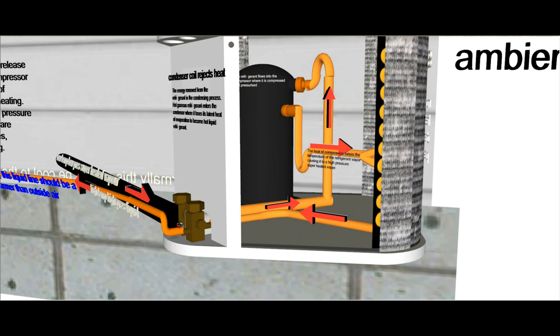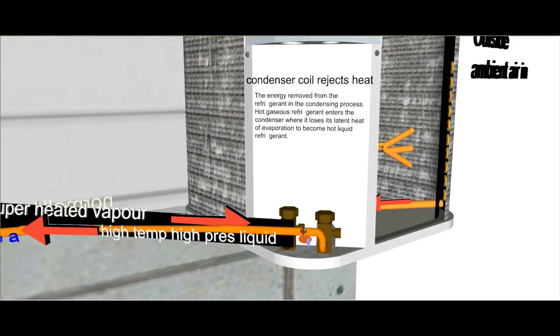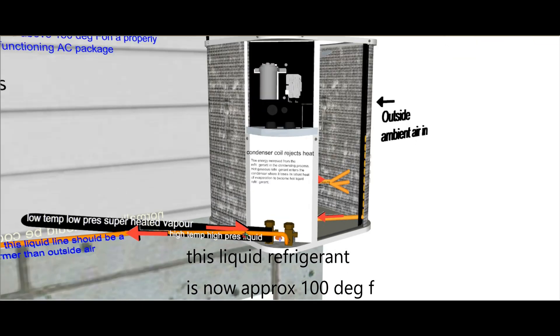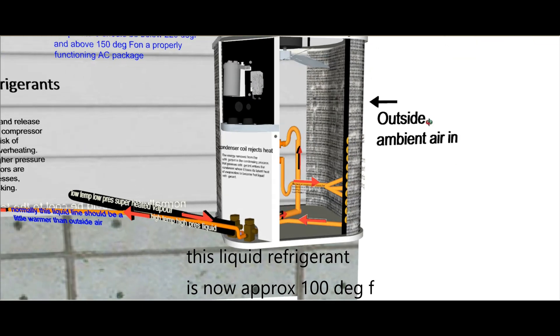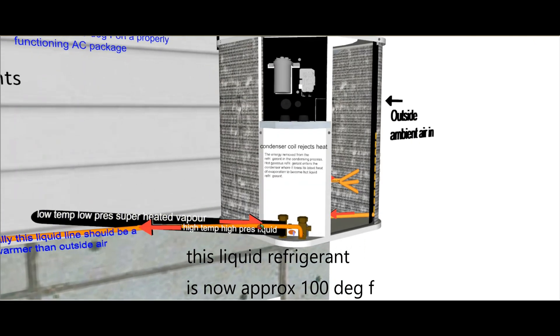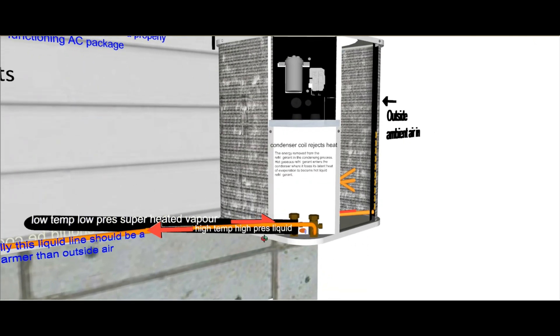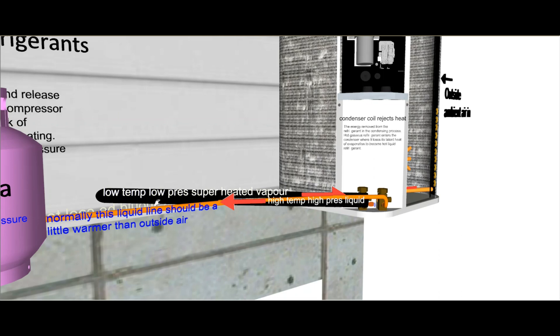Now generally speaking, this high temperature, high pressure liquid is around 20 degrees warmer than the outside ambient air. So this was 80 degrees Fahrenheit, this is about 100 degrees Fahrenheit, so it's warm to the touch. Right? So it's not cool, it's still warm, and now it's a liquid. So now it's going to go all the way back to the evaporator in the house.